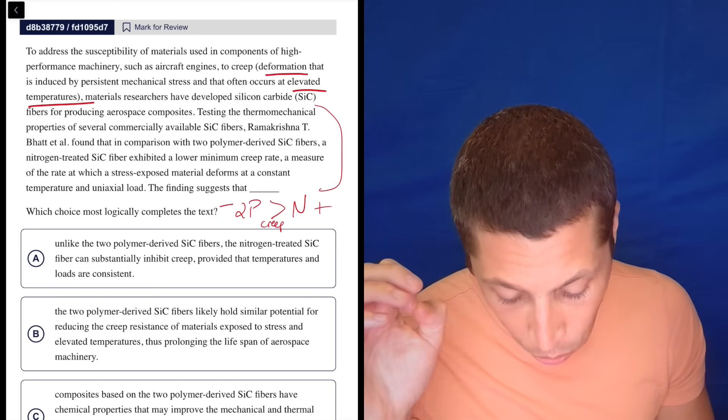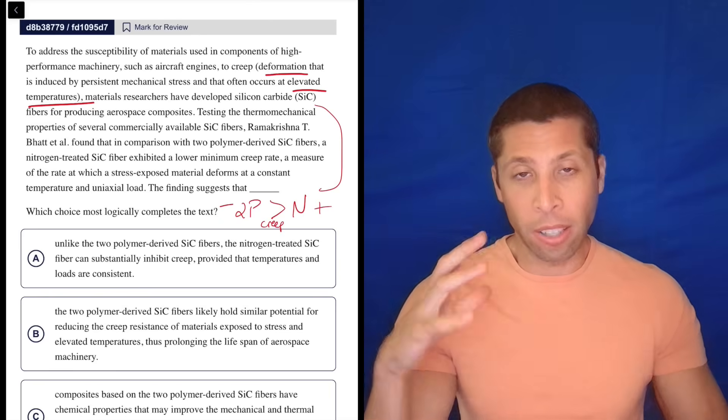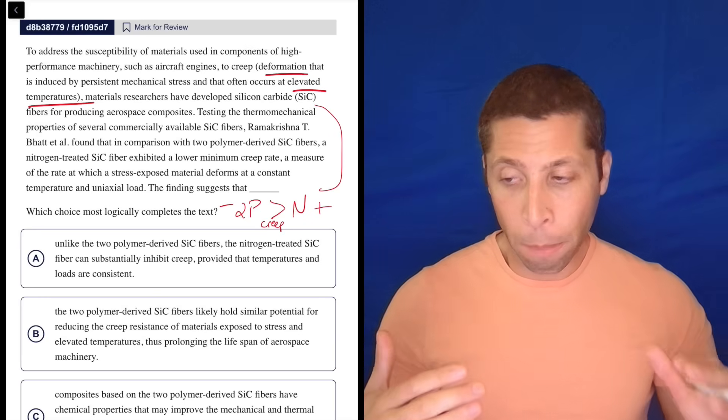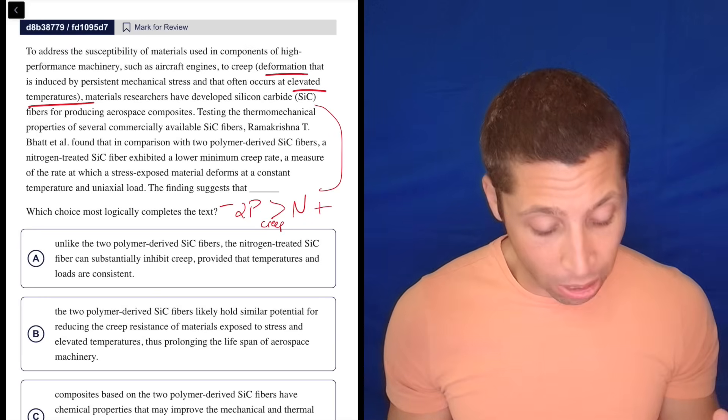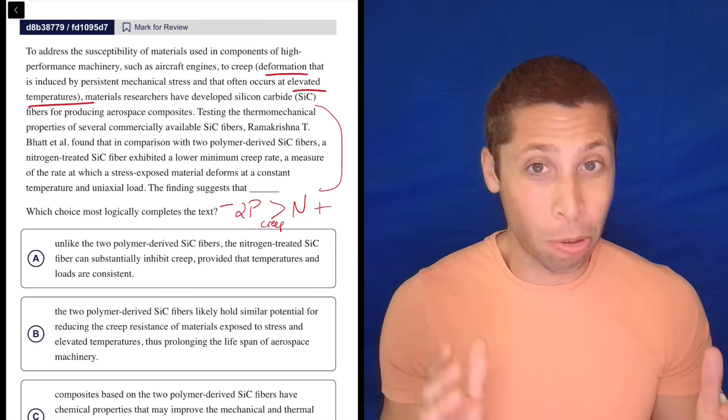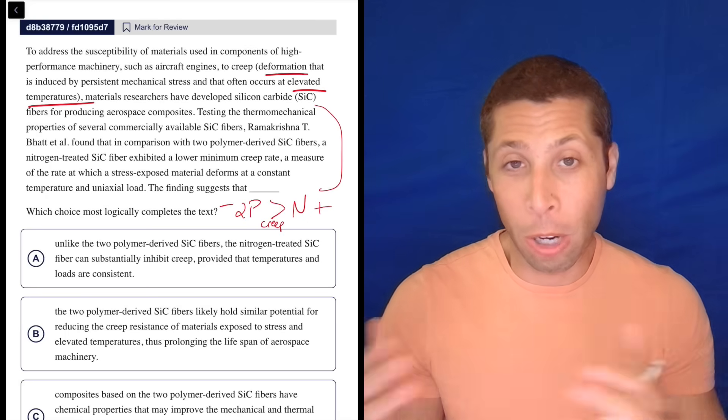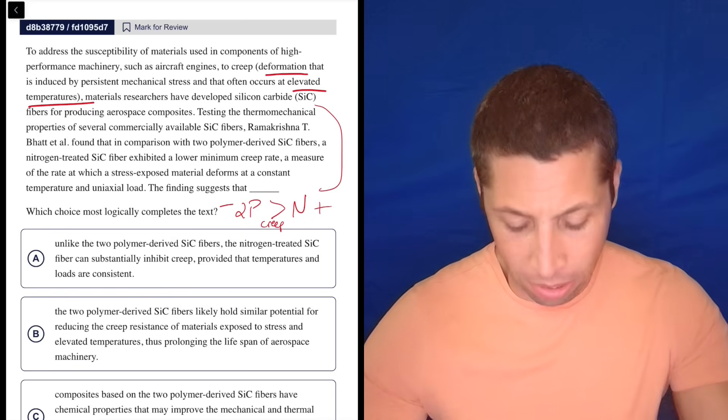Right, so creep is bad. I don't know what this comparison is going to do, but if it talks about the creep rate, the nitrogen one has less creep. It sounds weird to say, but that also makes it better, right? Because creep is a bad thing. Let's see what the choices give us.